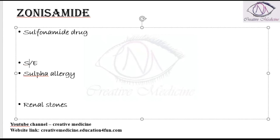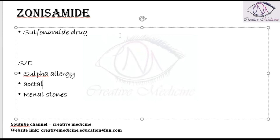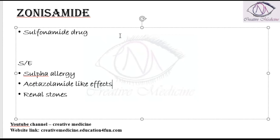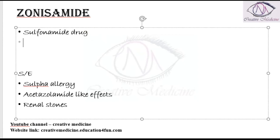The main side effects of Zonisamide are: it can cause sulfa allergy, it can also cause acetazolamide-like effects, and it can cause renal stones. Zonisamide is also a carbonic anhydrase inhibitor.